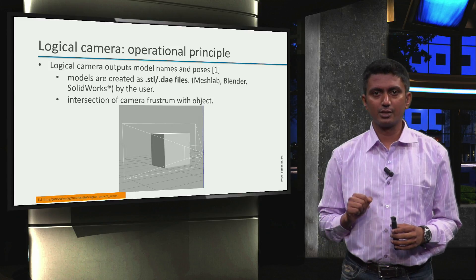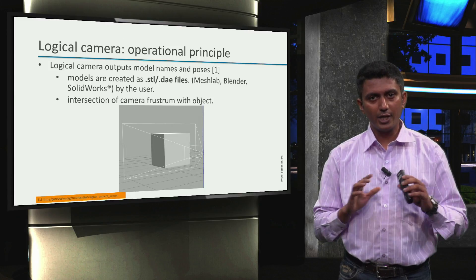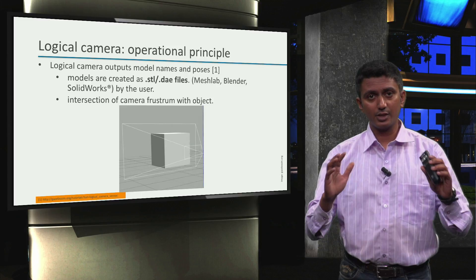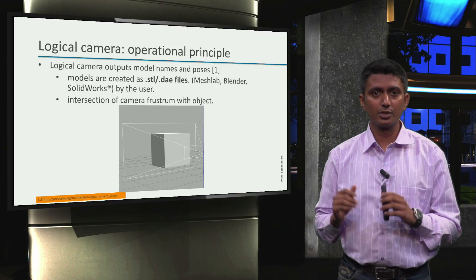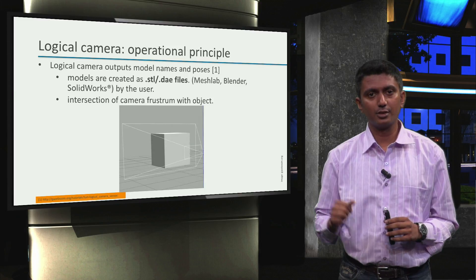Here is a simple illustration of the logical camera frustum. The white pyramidal outline that we see around the grey box is the camera frustum, and the grey box is the object of interest.